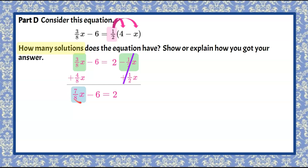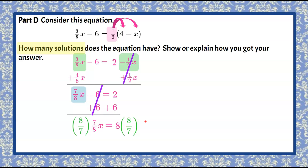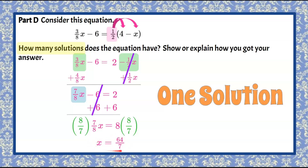Now I want to isolate the variable term. The inverse of subtract 6 is to add 6, and to keep equality we do it to both sides. That creates a zero pair, bringing down seven-eighths X, equal to 2 plus 6, which is 8. To solve for X, I do the inverse of multiplying by seven-eighths, which is to multiply by its reciprocal, eight-sevenths, on both sides. Any value multiplied by its reciprocal is 1, so we have 1X, or just X, equal to 8 times eight-sevenths, which is 64 sevenths. So X equals 64 sevenths, meaning this equation has one solution.